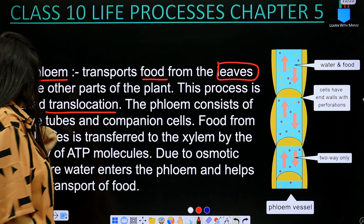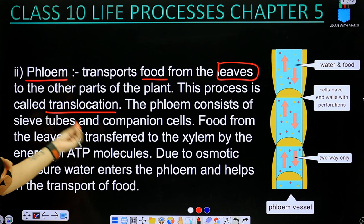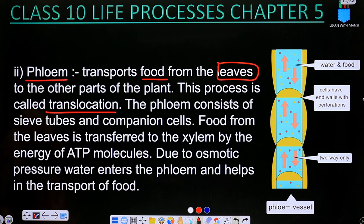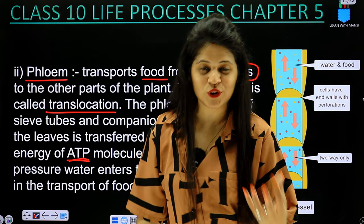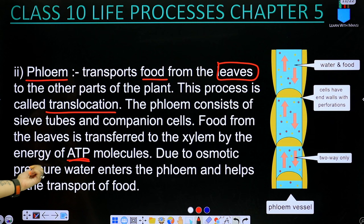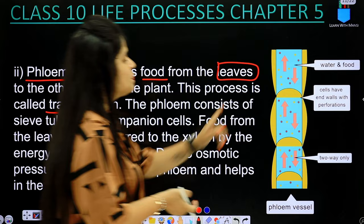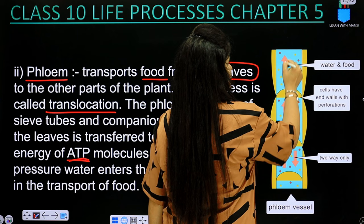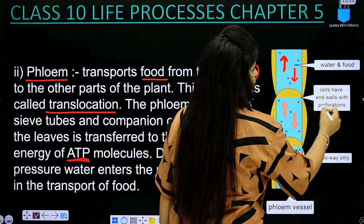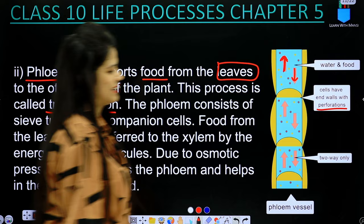The phloem consists of sieve tubes and companion cells. Food from the leaves is transferred by the energy of ATP molecules — ATP being the energy fuel for any cell. Due to osmotic pressure, water enters the phloem and helps in the transport of food. Unlike xylem which is one-way, phloem is two-way — water and food can go both up and down. Phloem cells have end walls with perforations.